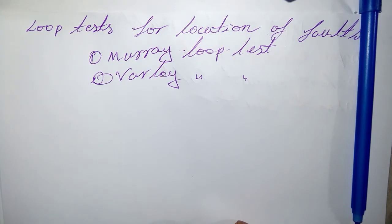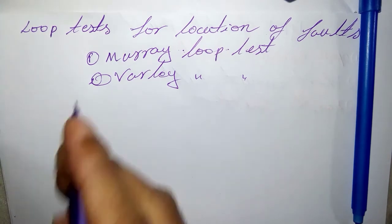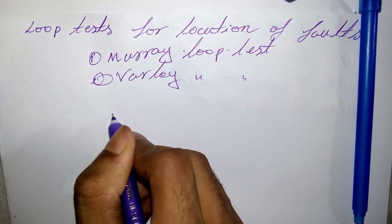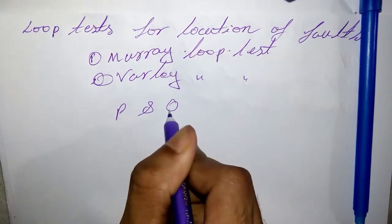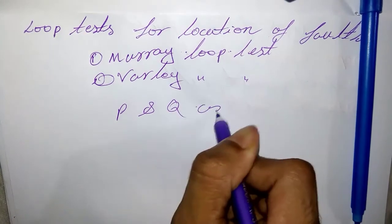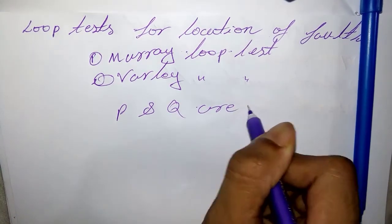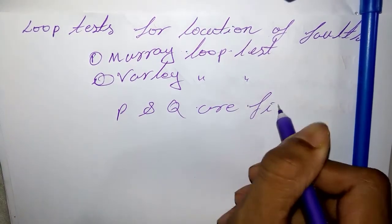In the Murray Loop Test, the ratio of arms P and Q are fixed resistance.